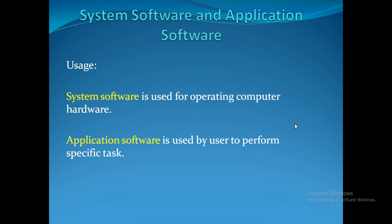System software is used for operating computer hardware. Application software is used by the user to perform a specific task. For example, YouTube is used to play videos — that is a specific task. Facebook is used to interact with people available on the internet. Each application software has its own specific task.